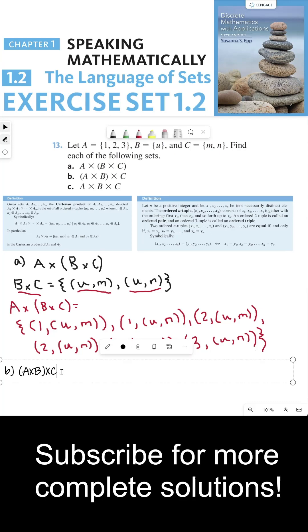So for A cross B cross C, according to the order of operations, we should figure out what A cross B is. So A cross B is a set of all ordered pairs where the first element is in A and the second element is in B. So now that I have A cross B, I can take that set, which contains three elements, and cross that with C. So this is going to be the set of all ordered pairs where the first element is A cross B, like one comma U.